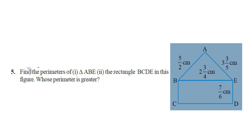Find the perimeter of triangle ABE and the rectangle BCDE, and determine whose perimeter is greater. In the figure you can see a triangle and a rectangle. First, let us find out the perimeter of the triangle. You know how to find the perimeter of a triangle — you add all the lengths of the sides: AB plus BE plus EA.